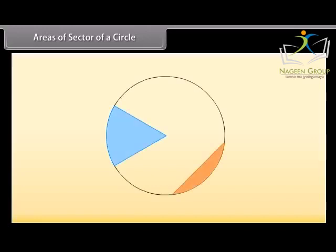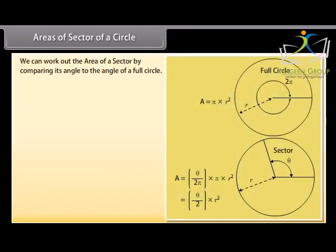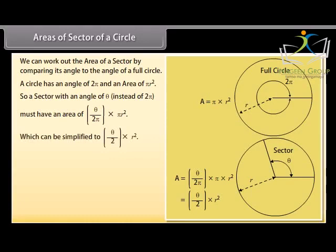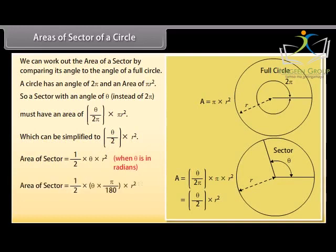There are two main slices of a circle. The pizza slice is called a sector, and the slice made by a chord is called a segment. The area of a sector is found by comparing its angle to a full circle. A circle has an angle of 2 pi and area pi r squared, so a sector with angle theta has area (theta / 2pi) × pi r squared, simplified to (theta / 2) r squared. Area of sector equals (1/2) × theta × r squared when theta is in radians, or (1/2) × (theta × pi/180) × r squared when theta is in degrees.